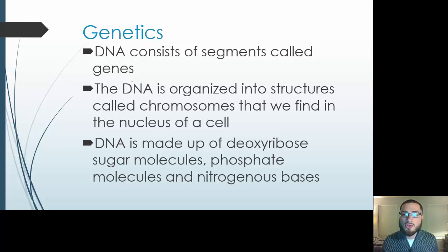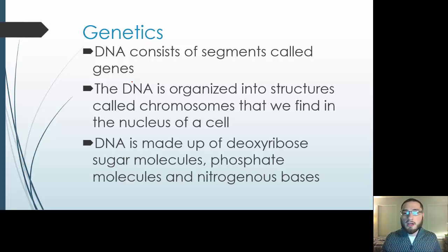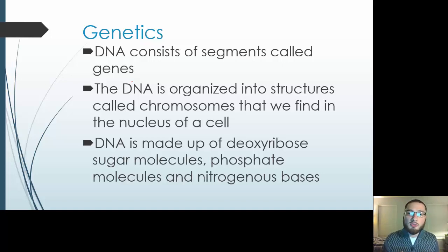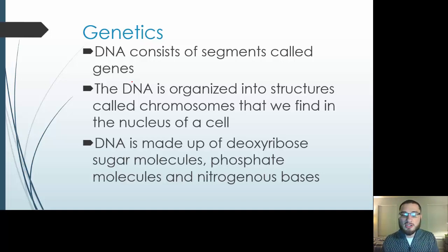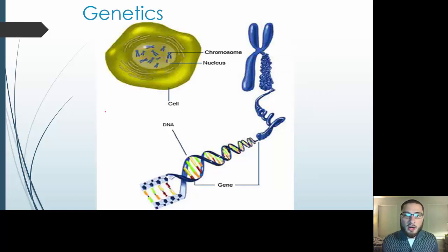The DNA is organized into structures called chromosomes. DNA is a very long strand that, if you were to stretch it all the way out, it would stretch for numerous feet — it wouldn't look like something that would fit into a little cell, into a nucleus. So it's actually wound up into structures called chromosomes that then go into the nucleus of a cell. DNA is made up of deoxyribose sugar molecules, phosphate molecules, and nitrogenous bases. It is a twisted ladder that we call a double helix.